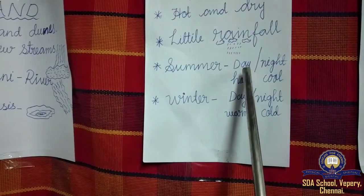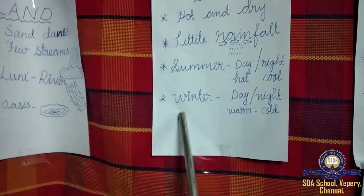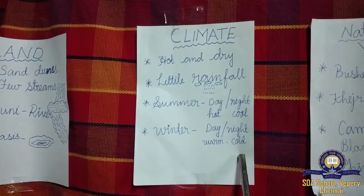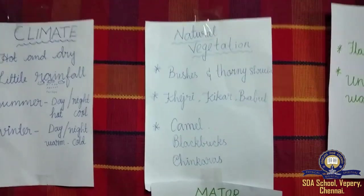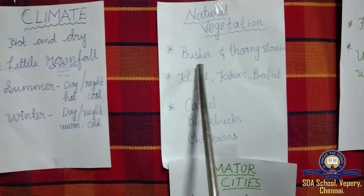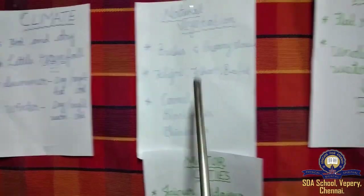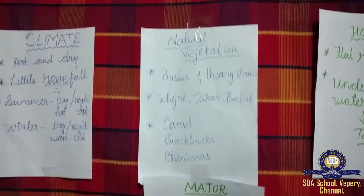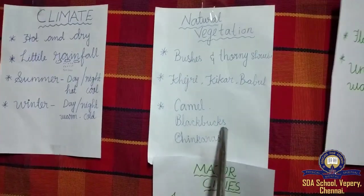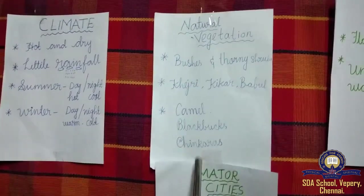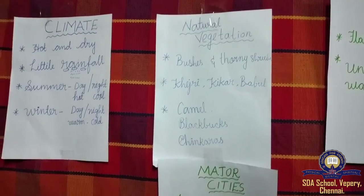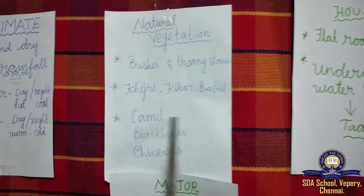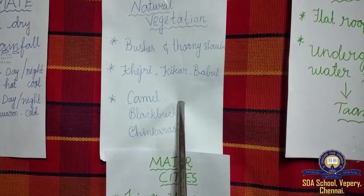During summer, daytime is hot and nighttime is cool. During winter, daytime is warm and nighttime is very cold. For natural vegetation, trees and plants include bushes, thorns, and shrubs like gejri, gigar, and babul. Animals found here include camels, blackbucks, chinkaras, and Indian bustards. The camel is the most famous animal in the desert.